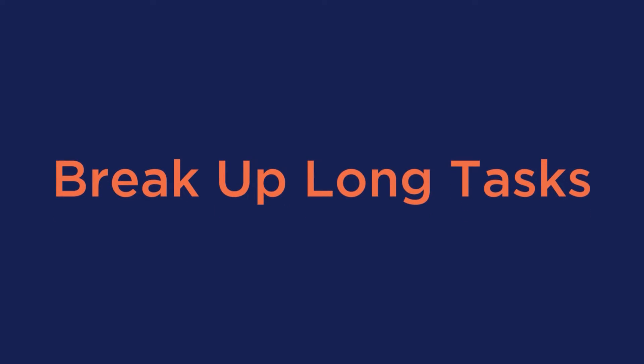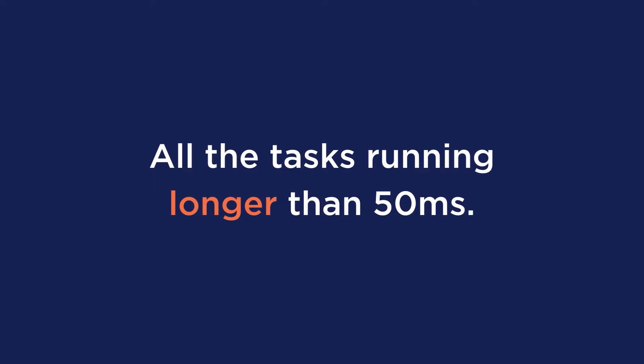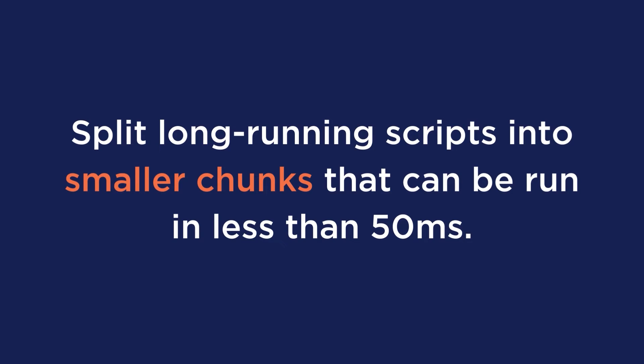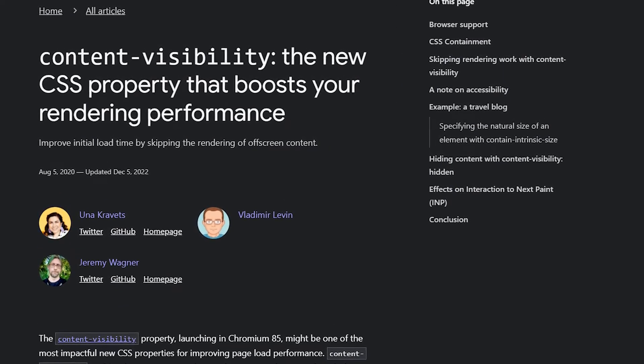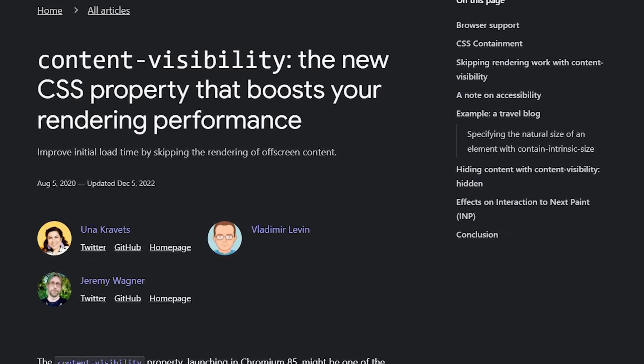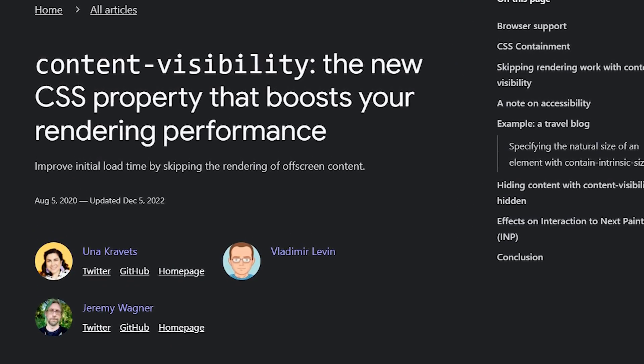Next is to break up long tasks. When the main thread is busy and blocked, the FID grade is negatively affected and the page can't respond to user inputs or interactions. The main thread is blocked by long tasks that the browser can't interrupt — that is, all tasks running longer than 50 milliseconds. To solve this, you should split long-running scripts into smaller chunks that can run in less than 50 milliseconds. You can do this with content visibility, a new powerful CSS property that boosts rendering performance by enabling the user agent to skip an element's rendering work until it's needed. Currently this property only works on Chrome and the majority of browsers based on it.